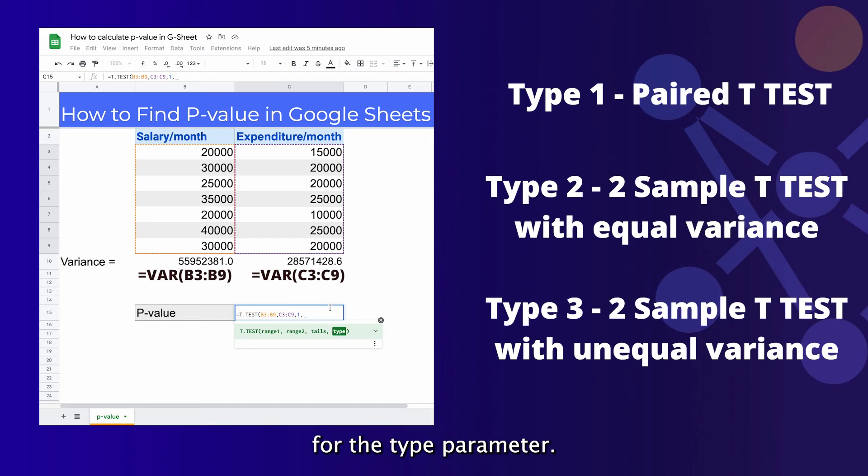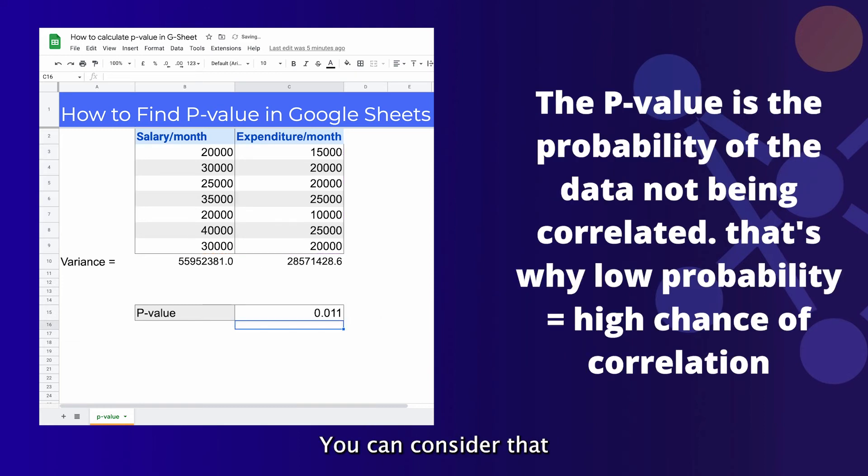You can consider that the probability below 0.05 is statistically significant as a general rule of thumb. So we can conclude that the two data are very much correlated to each other.